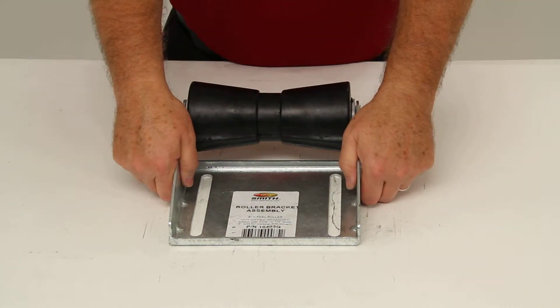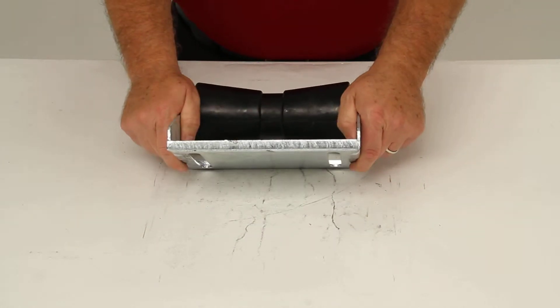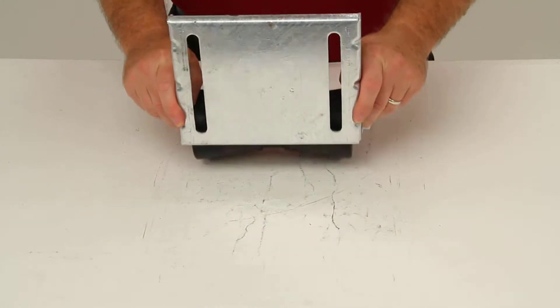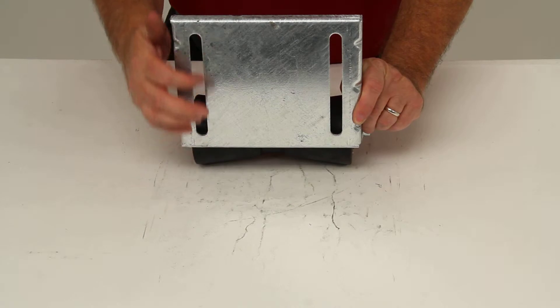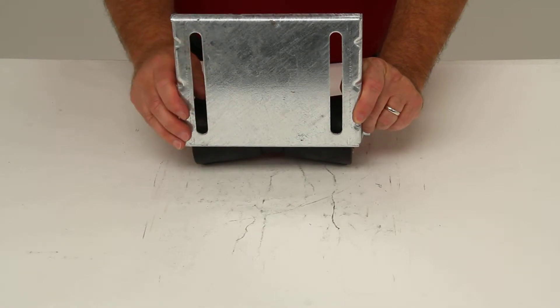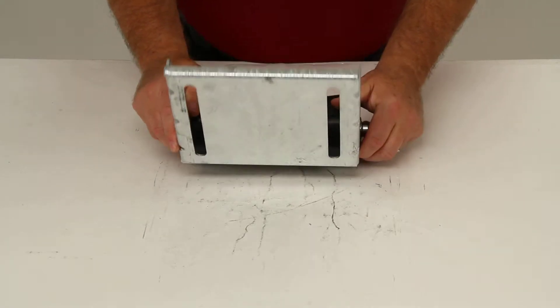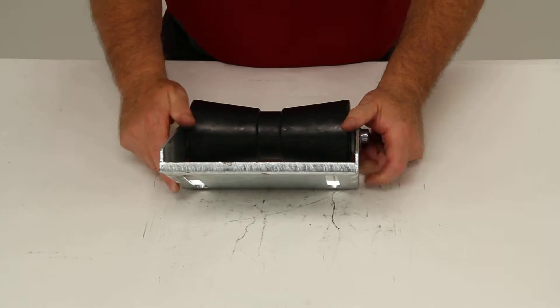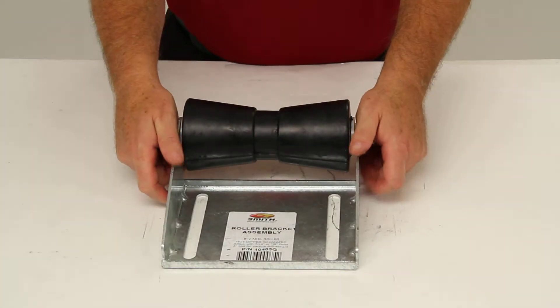The panel bracket lets you bolt your roller assembly onto the front of your boat trailer. It has the slotted mounting holes that allow you to adjust the position during installation. And for installation, it does require half-inch or 7/16 fasteners, which are not included.